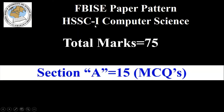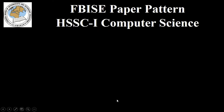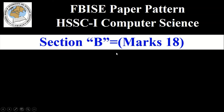In the computer science paper of class 11 or HSSC-1, Section A has 15 MCQs. These multiple choice questions are included from all chapters and topics, meaning all 15 MCQs are included amongst all chapters prescribed by the Federal Board syllabus for computer science. Now let's move towards the next section, that is Section B.